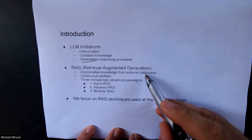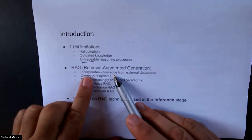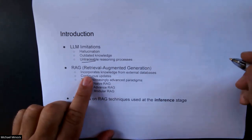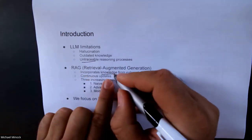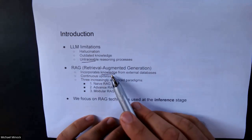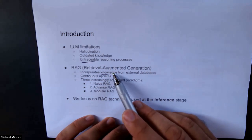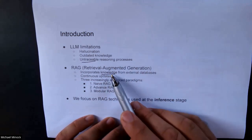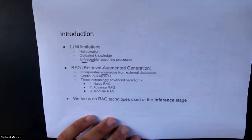RAG, which we touched on last lecture, incorporates knowledge from external databases. We have this whole pipeline and we can put in knowledge, text, or information from external databases — we can just add more information in. For instance, if we're asking questions about the state of a company, as new deals and new employees get added into the company, they can in principle be incorporated into the RAG system. That's the continuous updates feature — you can continue to update information.